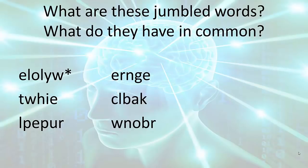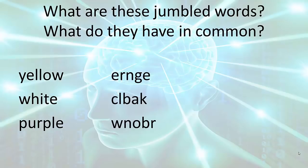So, what are these jumbled words and what do they have in common? The first word I want you to do is the word with the asterisk. I will give you five seconds. And the answer is yellow. The next word is white. The next word is purple. Green, black, brown. So, what do they have in common? Of course, they are all colors.